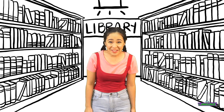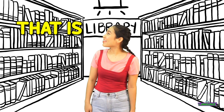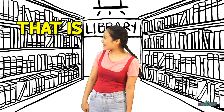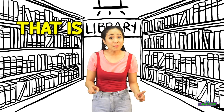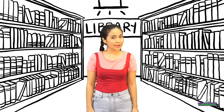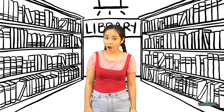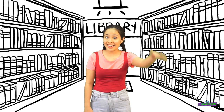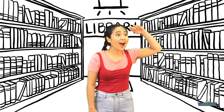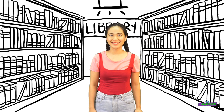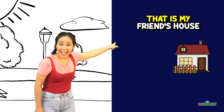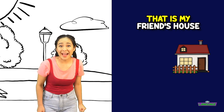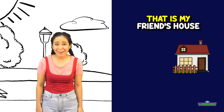We use 'that is' to point out one person or one object that is far from us. That is my friend's house.